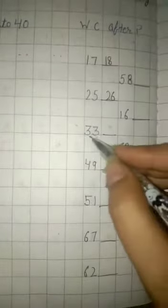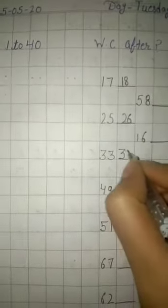Next is 3, 3, 33. After 33 comes 3, 4, 34.